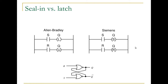There are differences between seal-in and latch. This is a latching circuit. We have a set signal and a reset signal, and Q is the output. Whenever we send a one to the set signal, Q becomes one, and it remains one no matter what happens to S after that. Q only goes to zero when a one is assigned to R.